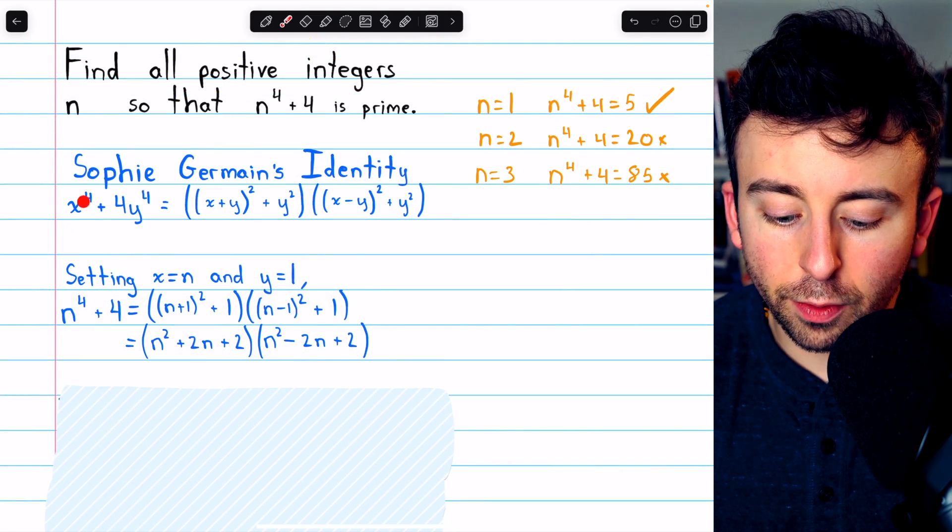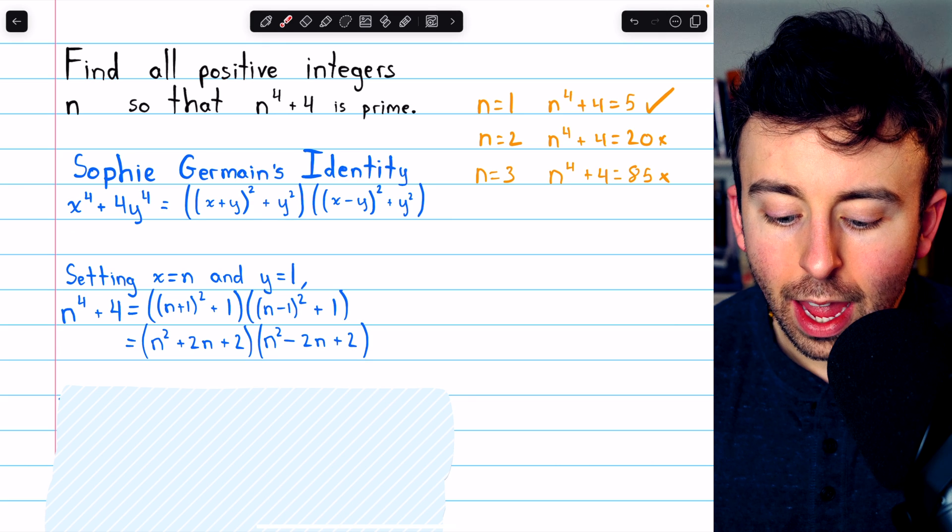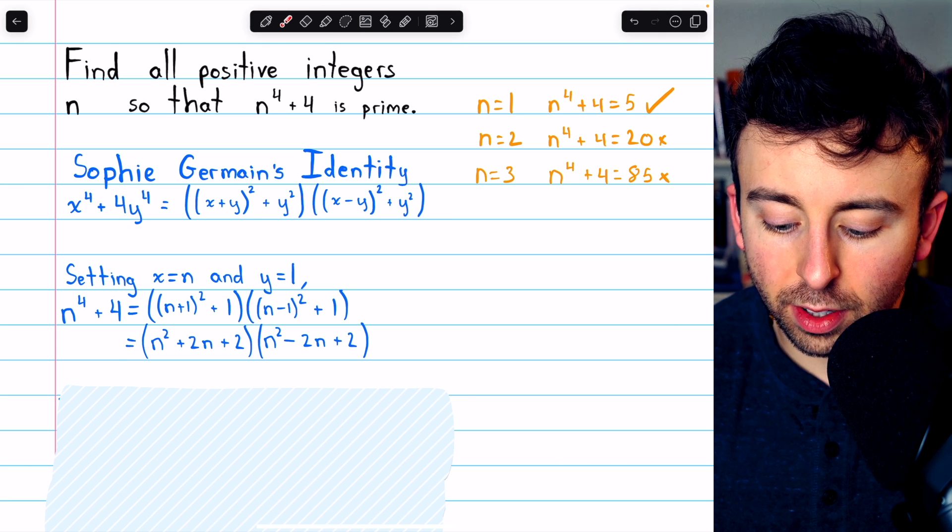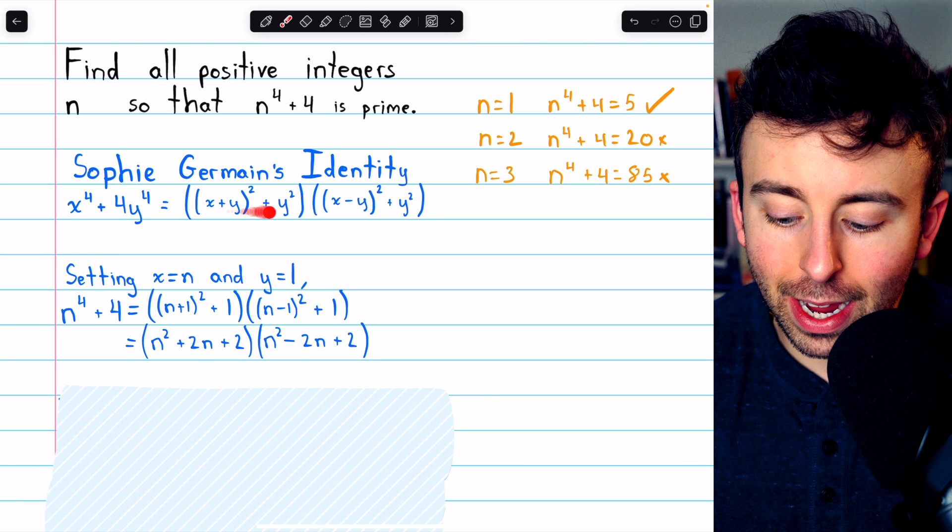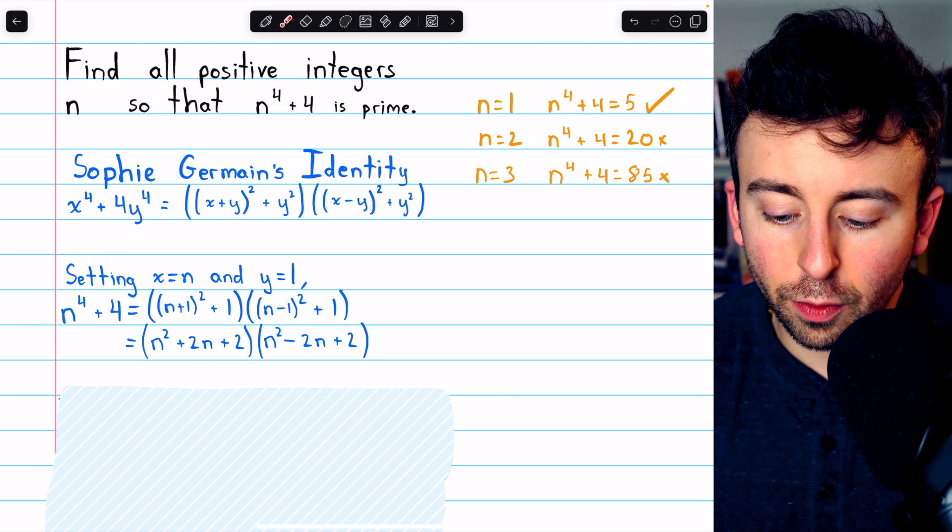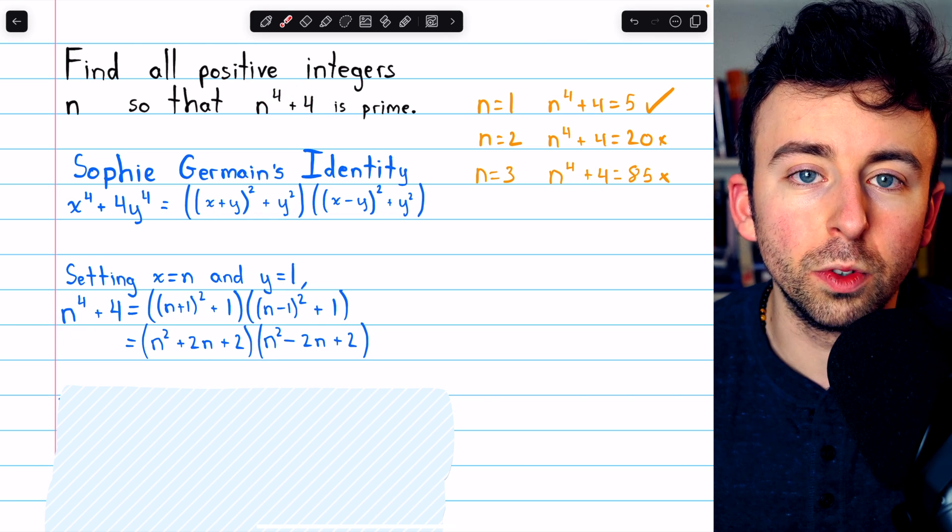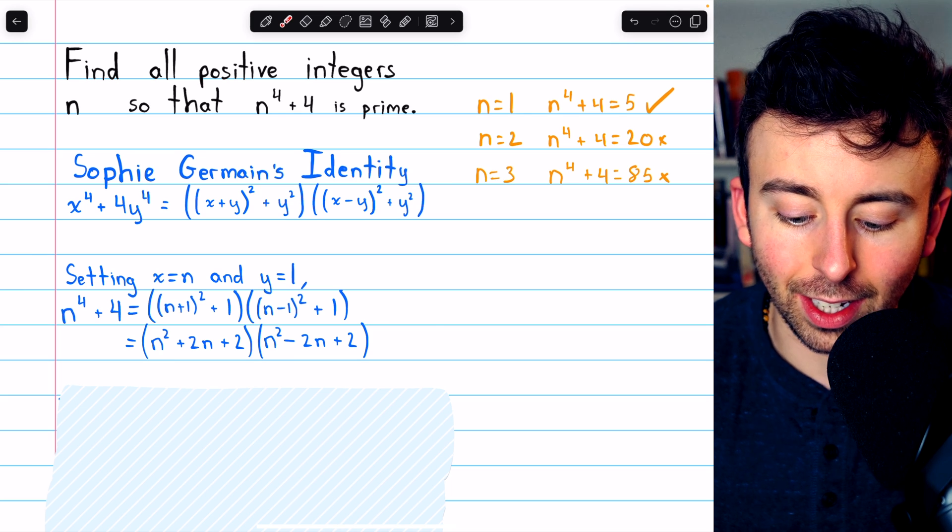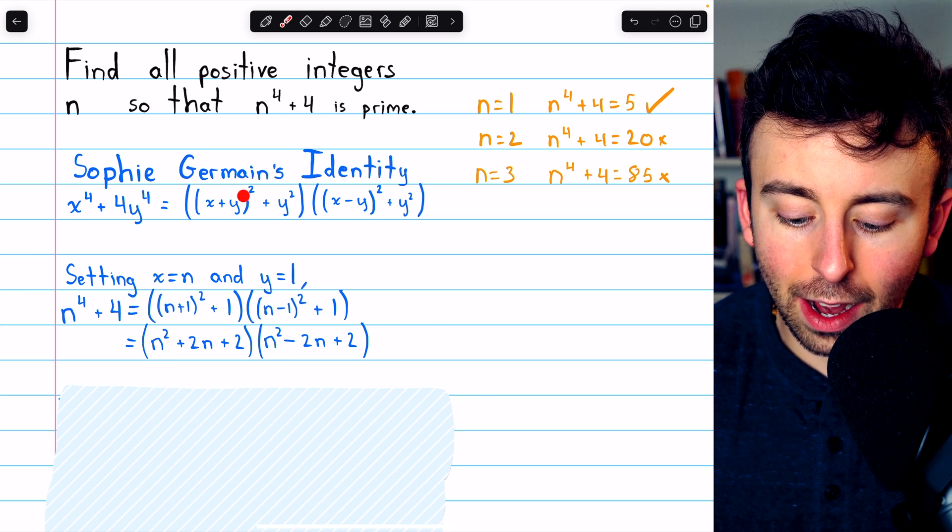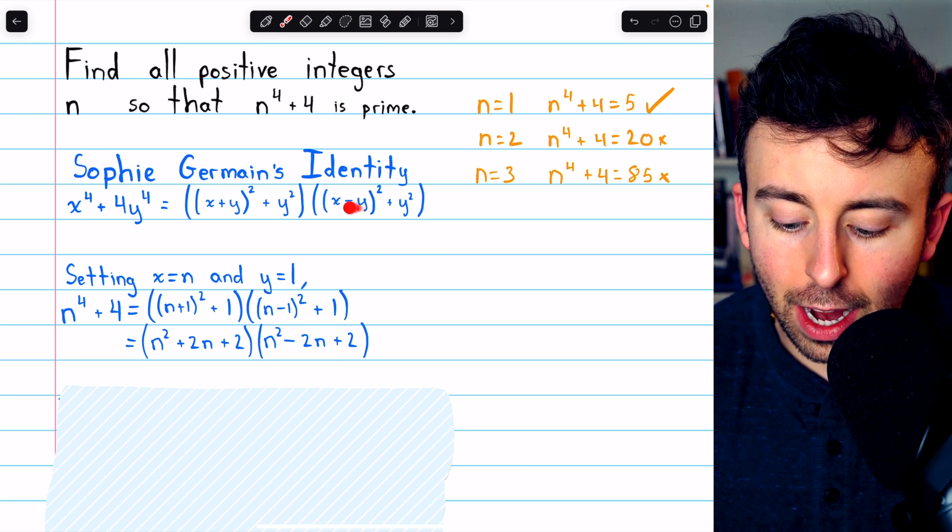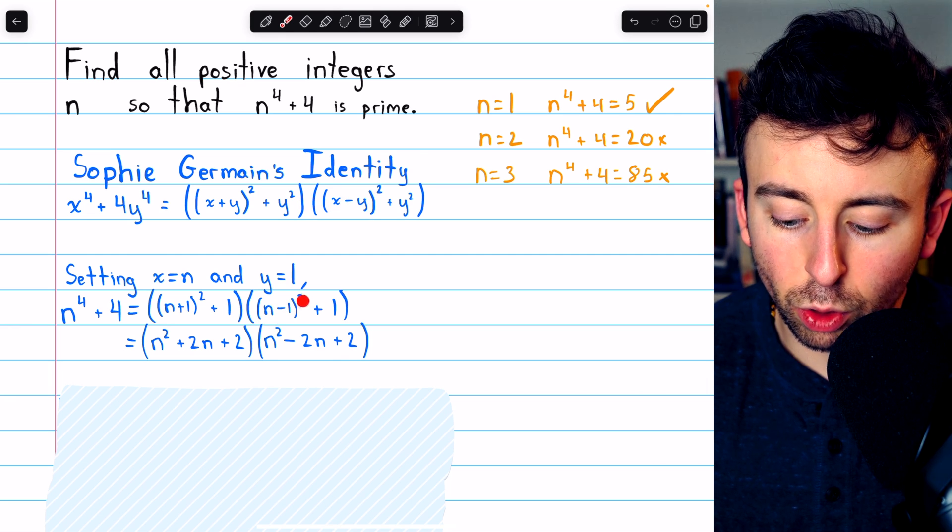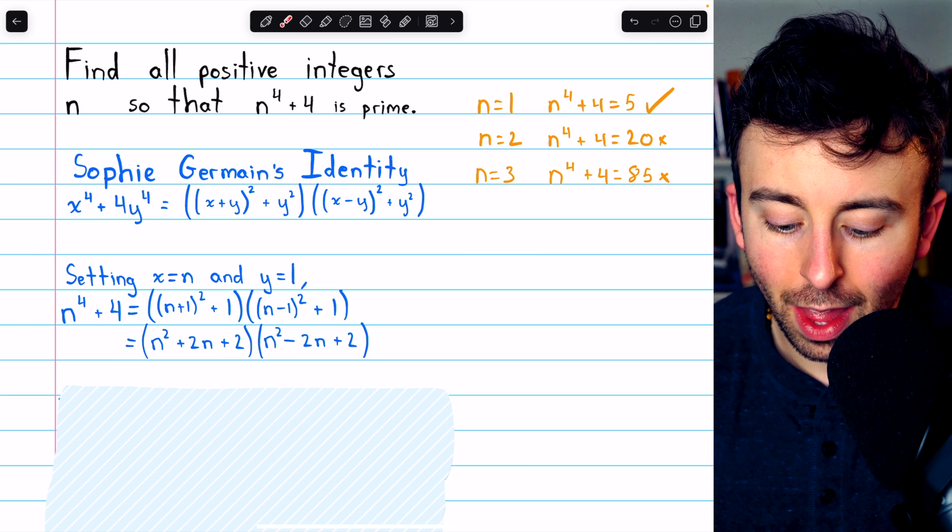Doing that, x to the 4 becomes n to the 4, and 4y to the 4, since y is 1, is just 4. And then Sophie Germain's identity gives us that n to the 4 plus 4, the expression whose primeness we are interested in, is equal to n plus 1 squared plus 1 multiplied by n minus 1 squared plus 1.